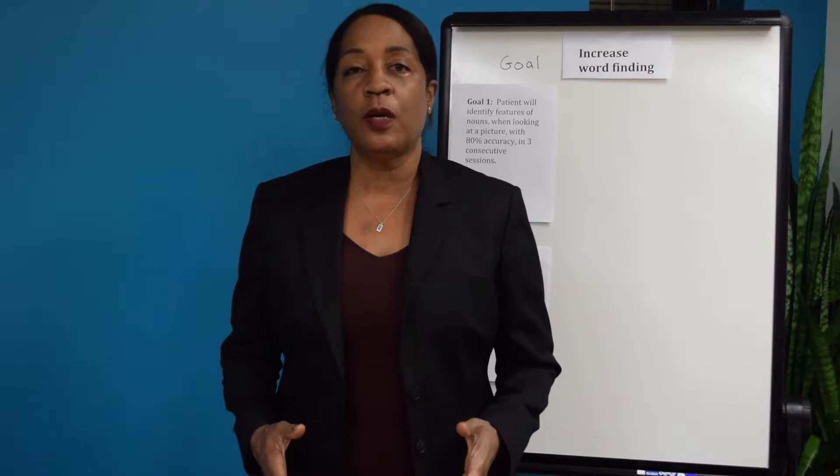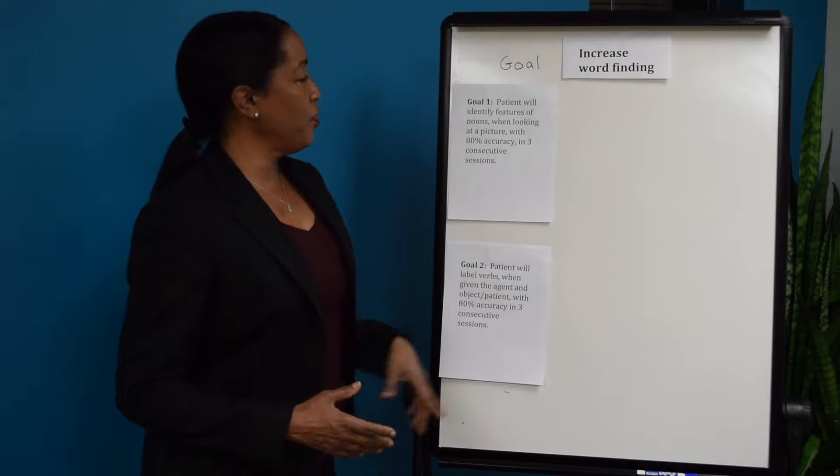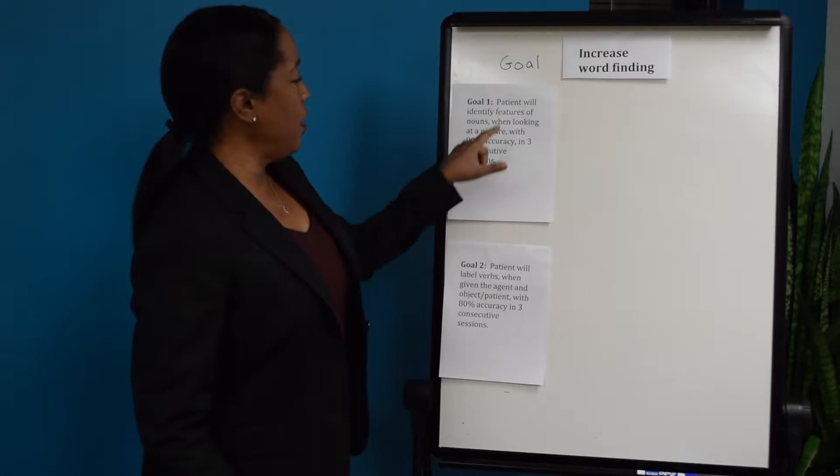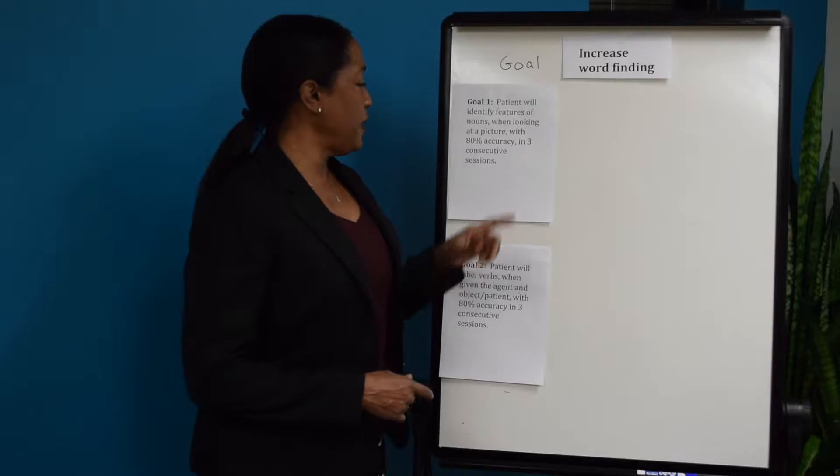Typically when a patient comes in, I would do an evaluation and confirm that word finding is a challenge for them, and then write goals. I'm going to give you an example of two typical goals. The goal is to increase word finding overall. Goal number one: patient will identify features of nouns when looking at a picture with 80% accuracy in three consecutive sessions.